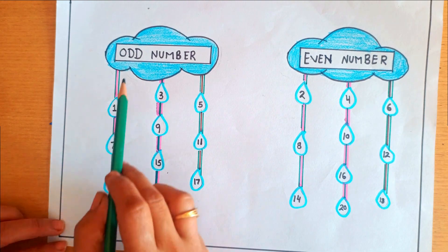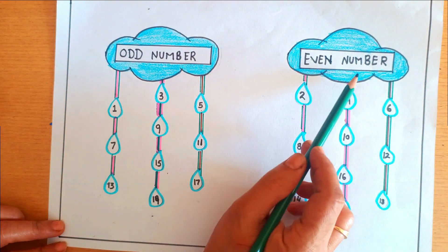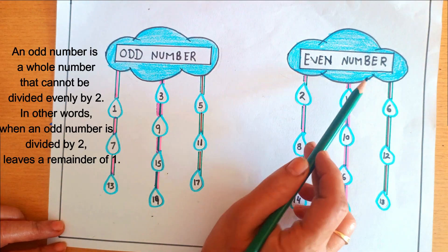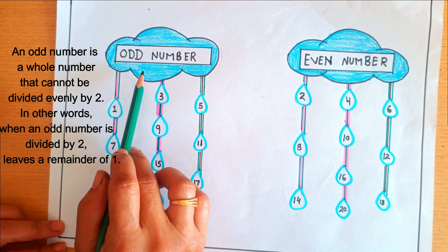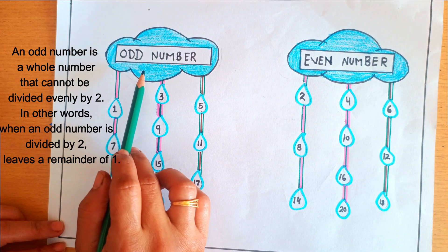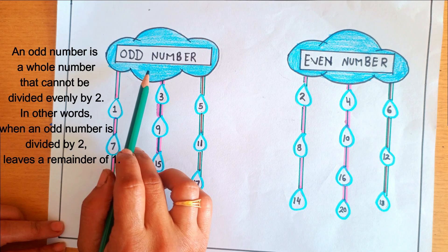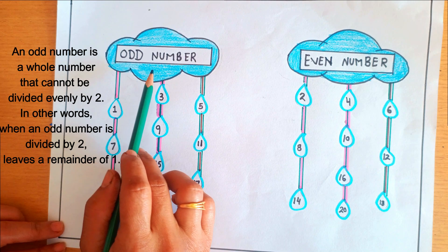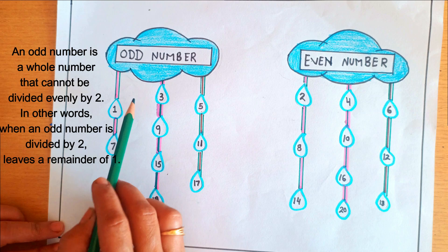Hello friends, today we will learn odd number or even number. An odd number is a whole number that cannot be divided evenly by 2. In other words, when an odd number is divided by 2, it leaves a remainder of 1.